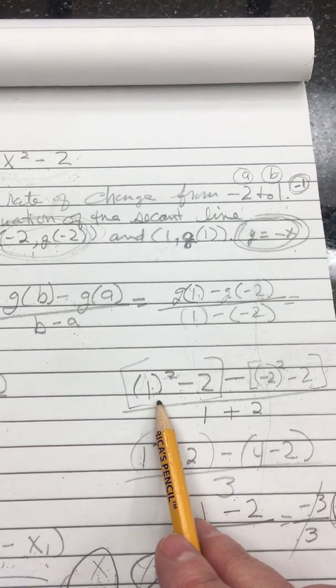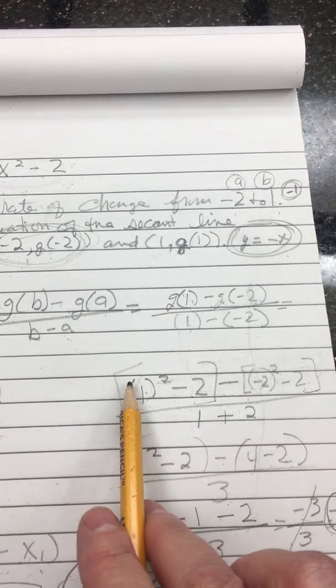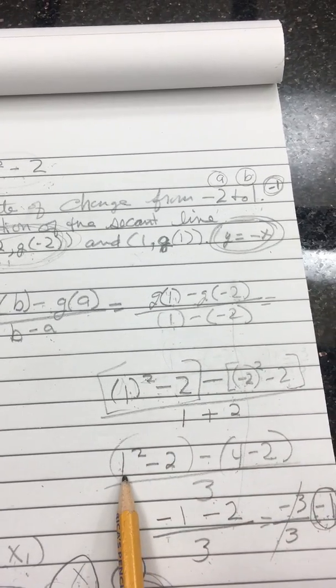Okay, so in the first part, you plug in, just like here, you plug in for B, you plug in the 1, and then over here you plug in the minus 2.